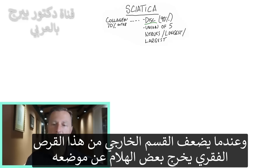What do we know about sciatica? We know 90% of the time it involves the disc. The disc has an outside and an inside — the inside is like a little jelly donut. When the outer part of that disc gets weakened, some of that jelly can squeeze out and put pressure on part of the nerve roots that make up the sciatic nerve. Then you have pain either in your butt or traveling down the back of the leg all the way down to the foot or the outer part of the leg.